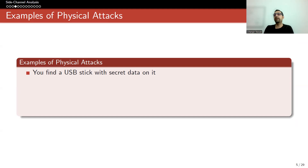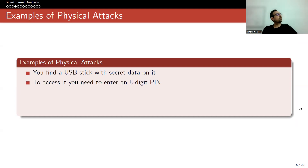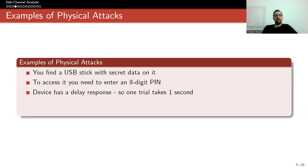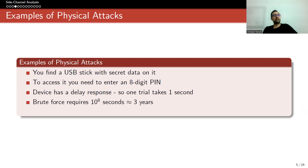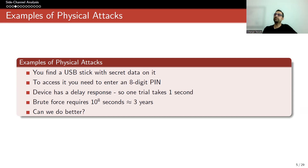You find a USB stick with secret data on it. You plug it in, and to access it, you need to enter an 8-digit PIN. The device has a delay response — one trial takes one second. Brute force requires 10 to the 8 seconds, which is about 3 years. So you cannot try one by one. The question is: can we do better? This is actually where side-channel attacks come into play.